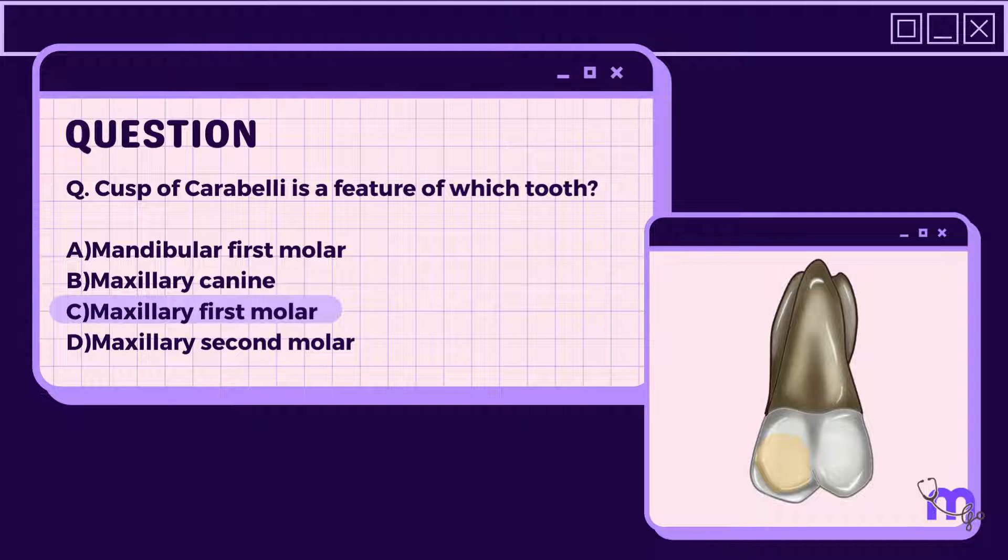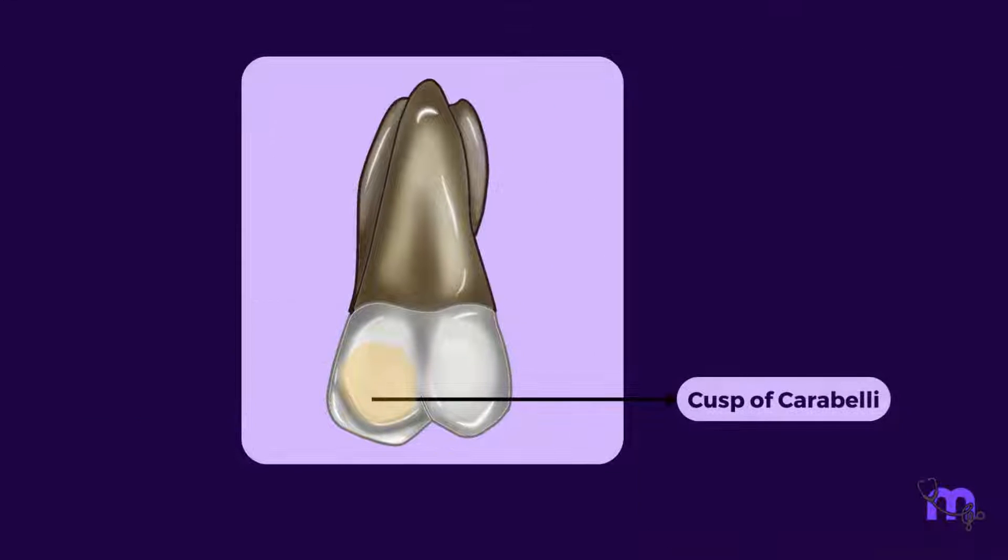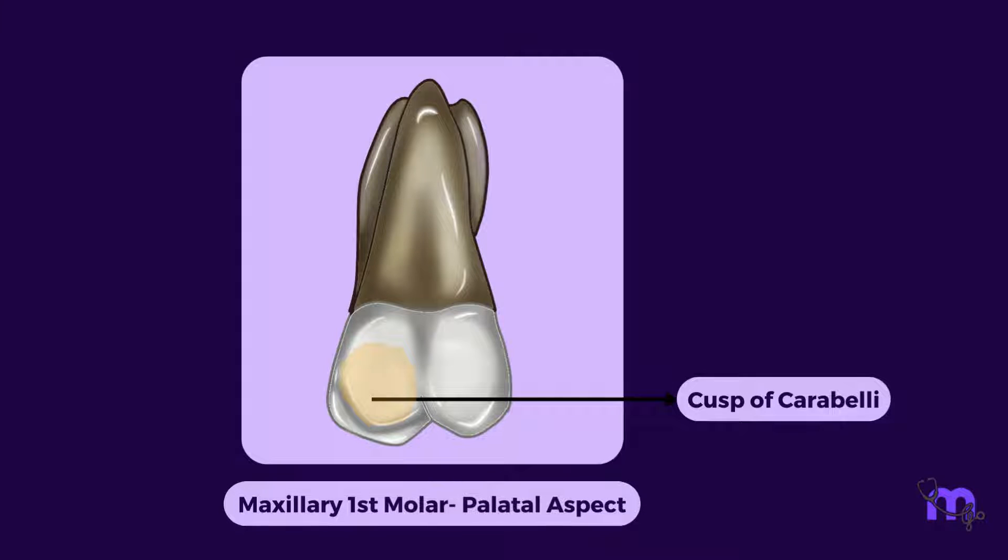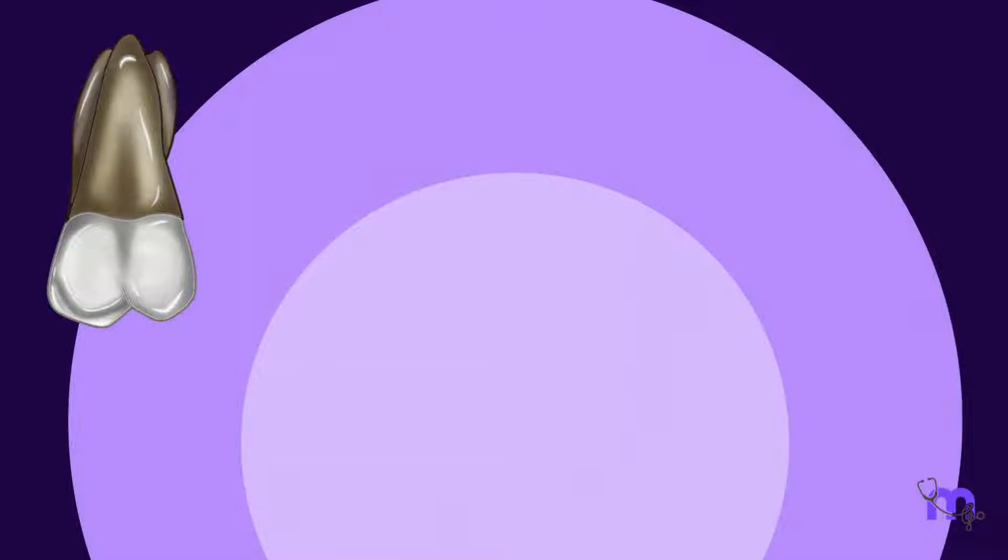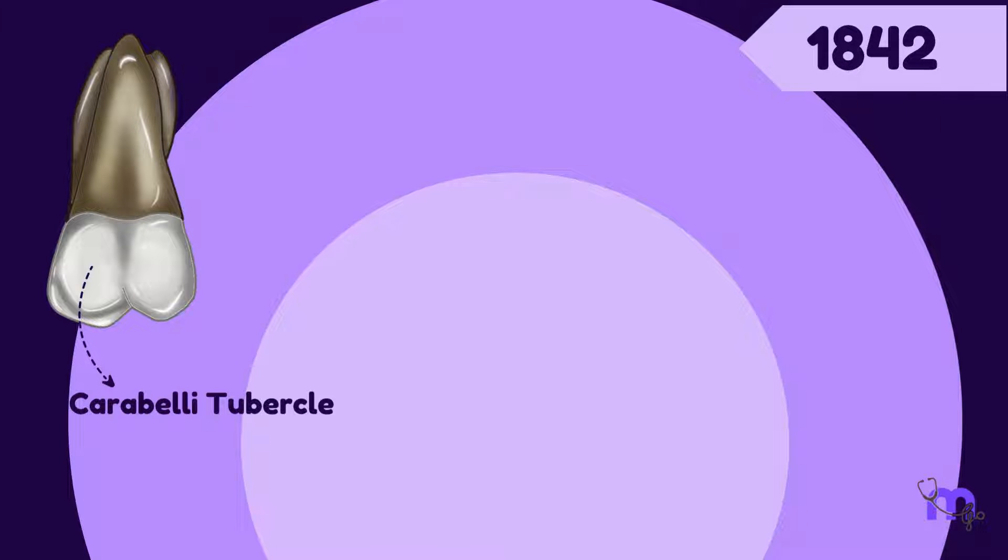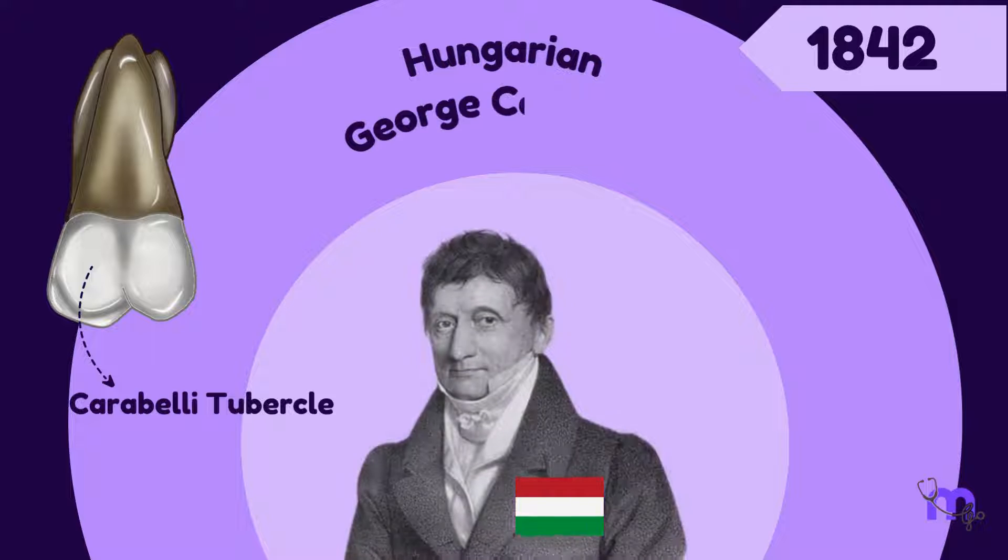Maxillary first molar. The cusp of Carabelli is an interesting dental feature that can be found on the maxillary first molars, specifically on the mesopalatal surface of the tooth. It is also known as Carabelli tubercle, tuberculum anomaly of George Carabelli. It was first described in 1842 by the Hungarian George Carabelli.